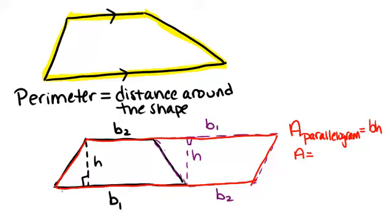we have to figure out what the base is. The base would be this full length right here, which would be b₁ plus b₂. So it's (b₁ + b₂) times the height.